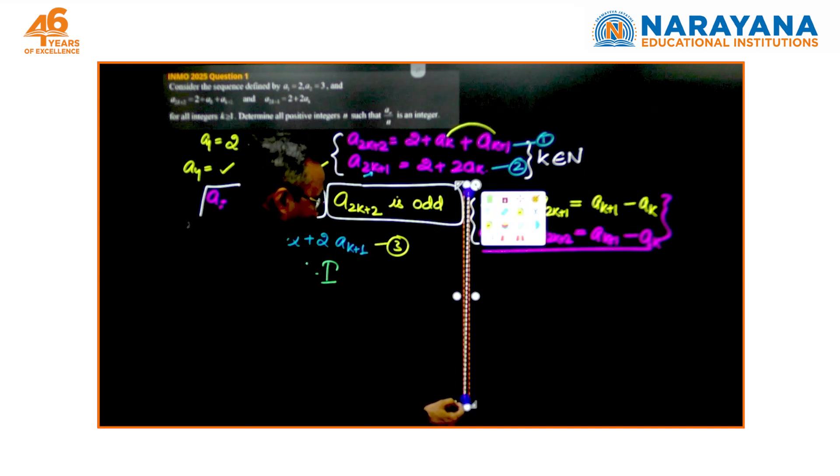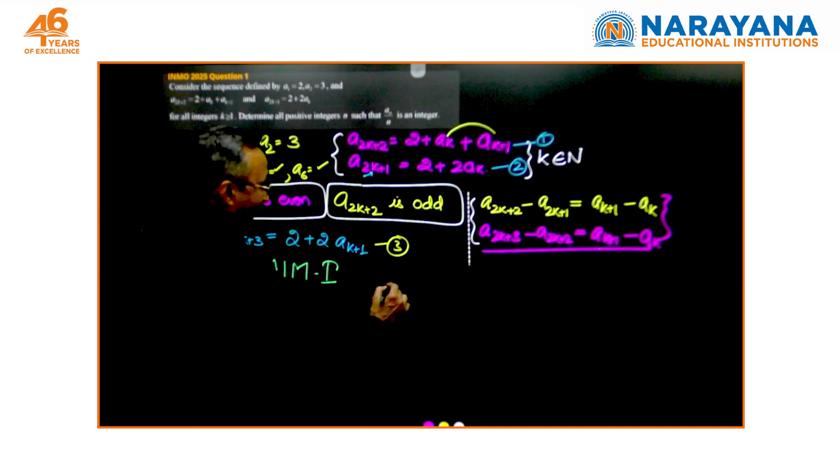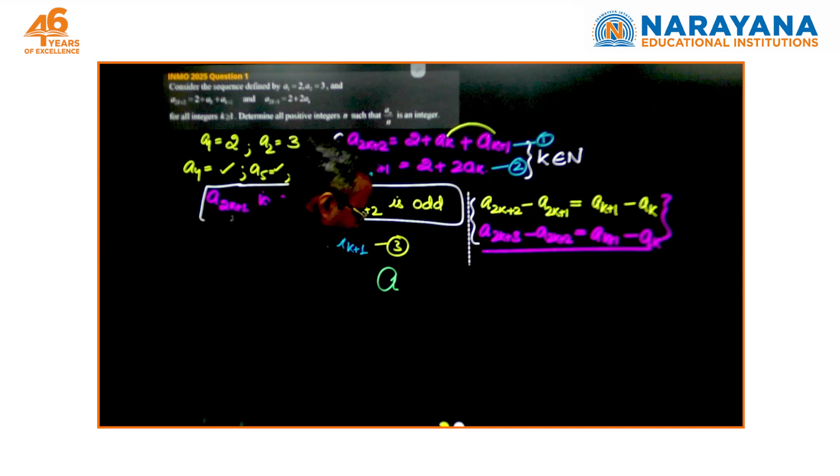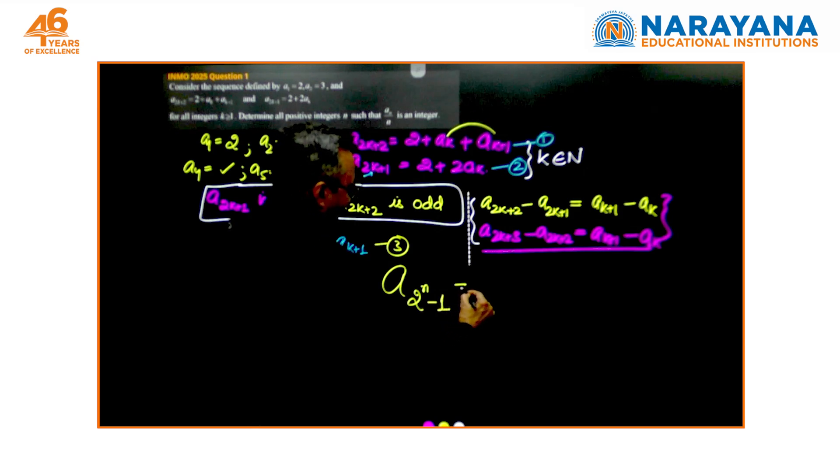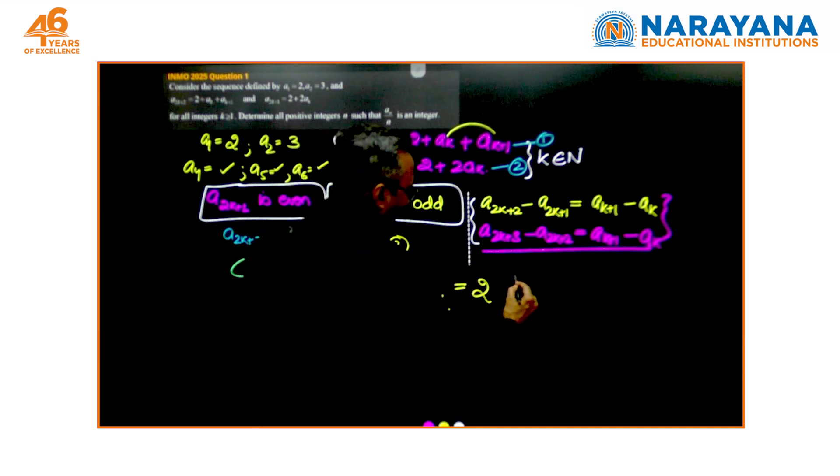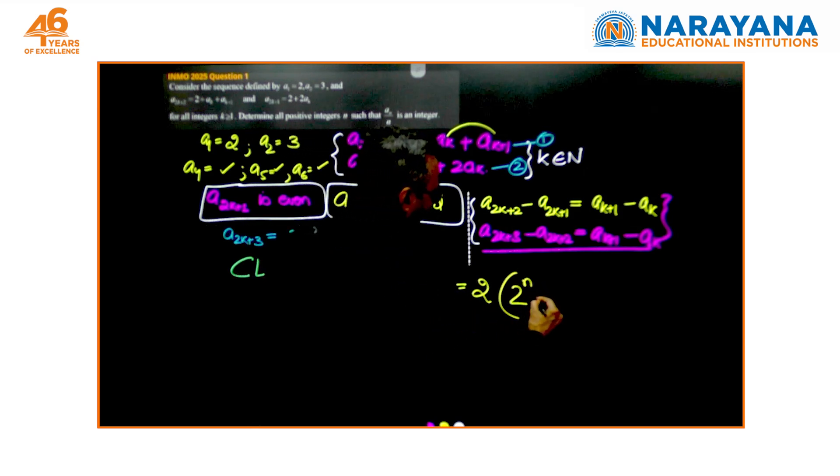So it is as simple as I write few terms and I make a statement: a_{2^n - 1} is 2 times 2^n minus 1. It is just a claim.